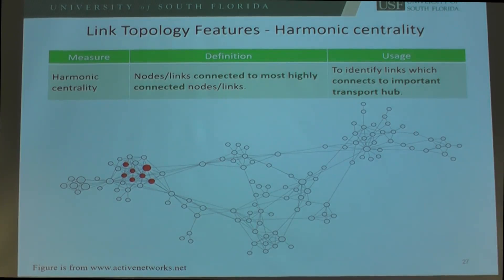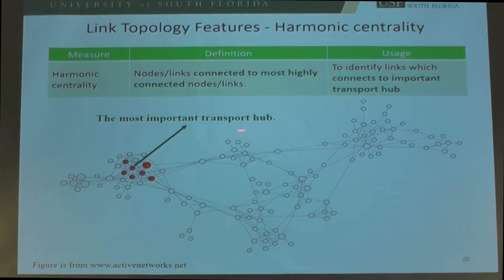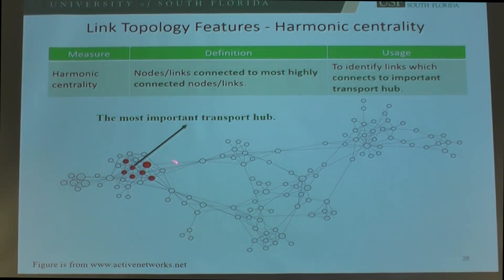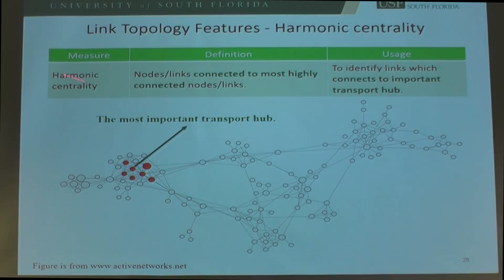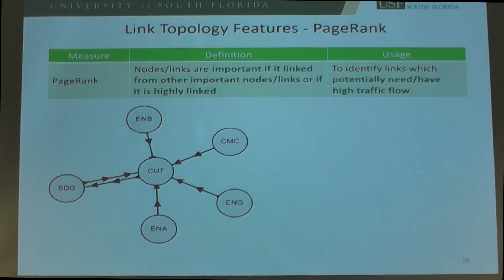The third topology feature is harmonic centrality, which identifies nodes or links connected to the most highly connected nodes or links — those connected to the most important transportation hub. From the previous figure, we identified the most important transportation hub based on alpha centrality, and all its neighbors are identified as nodes with higher harmonic centralities. The fourth topology feature is PageRank, which identifies nodes or links that are important if linked from other important nodes, or are themselves highly connected — used to identify links with potentially high traffic flow.